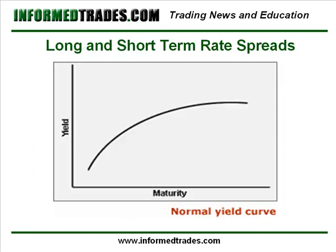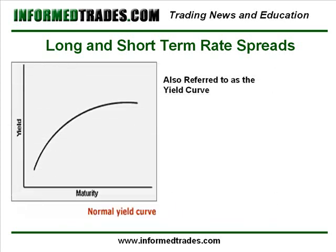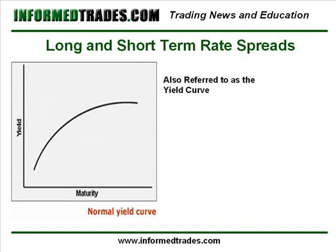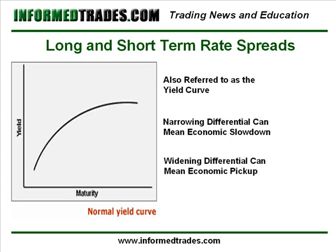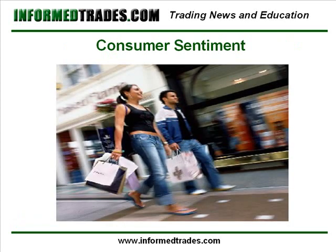Number nine is the spread between long-term and short-term interest rates. As we learned in our lessons on interest rates, normally the shorter the term of the loan, the lower the interest rate one will pay. This is considered a leading economic indicator because when the distance between short-term and long-term interest rates narrows, it indicates that market participants are anticipating Fed interest rate cuts, which normally come during an economic slowdown, or vice versa.